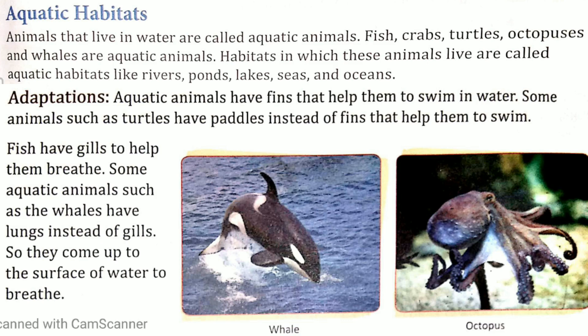Animals that live in water are called aquatic animals. Jo janwar pani mein rehte hain unko aquatic animals bolte hain. For example: fish, crabs, turtles, octopuses and whales are aquatic animals, kyunki ye pani mein rehte hain.